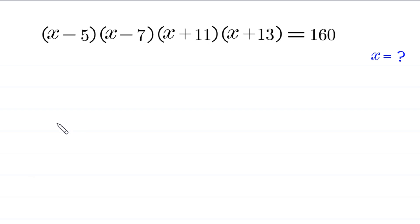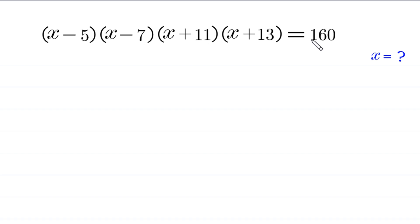Hello everyone, you are welcome to how to solve this very nice algebra equation. The equation is: x minus 5 times x minus 7 times x plus 11 times x plus 13 is equal to 160. Our job is to find all possible values of x.